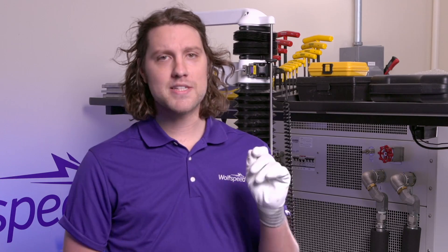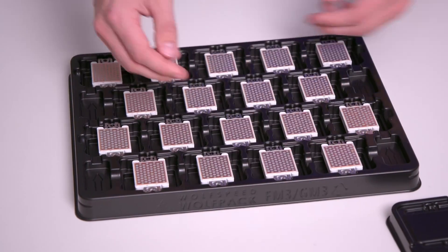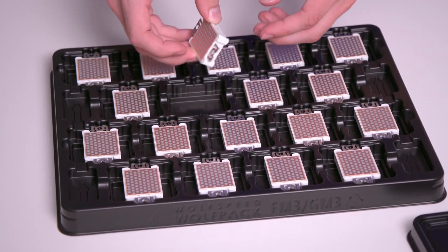Today, we're going to take a look at the press-in, press-out process for the Wolfspeed Wolfpack family of silicon carbide power modules, which are universally designed for industrial power electronic systems ranging from 10 to over 150 kilowatts.